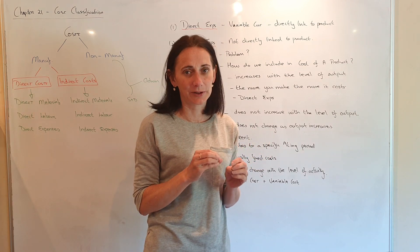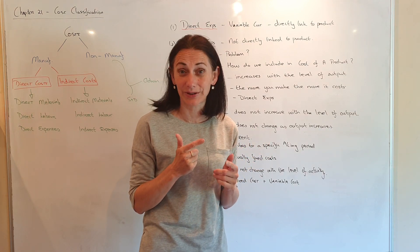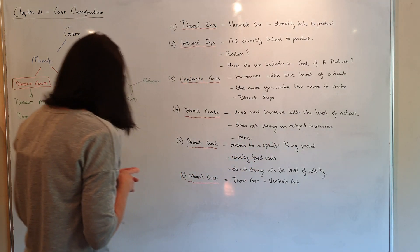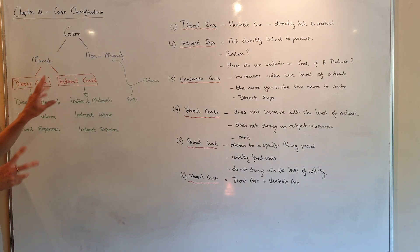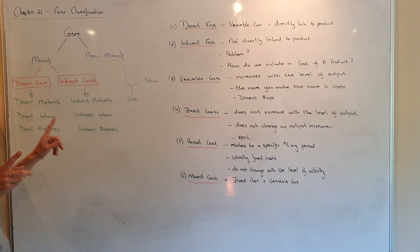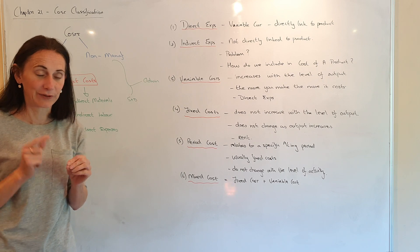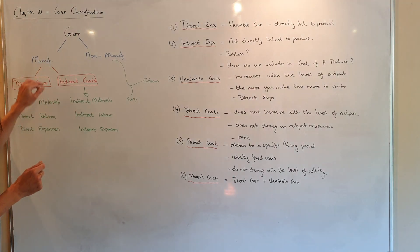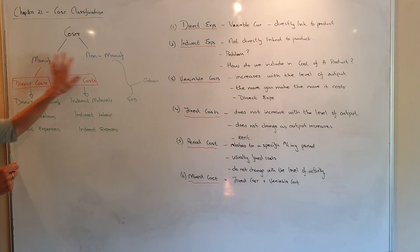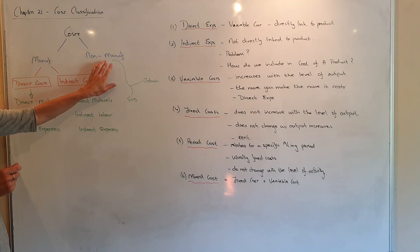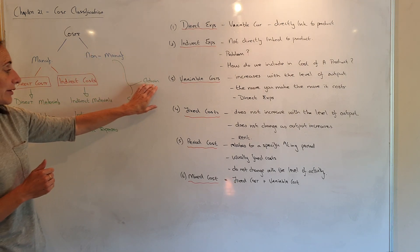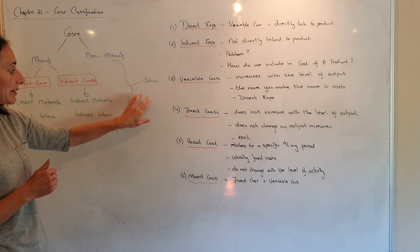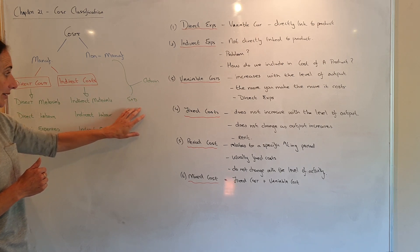It seems like a really simple chapter, but this is where the theory is going to come up. So costs are split into two different types. This is very much linked back to your manufacturing account — your manufacturing costs and your non-manufacturing costs. Your non-manufacturing is what is in your profit and loss account, including your administration expenses and your S&D expenses.